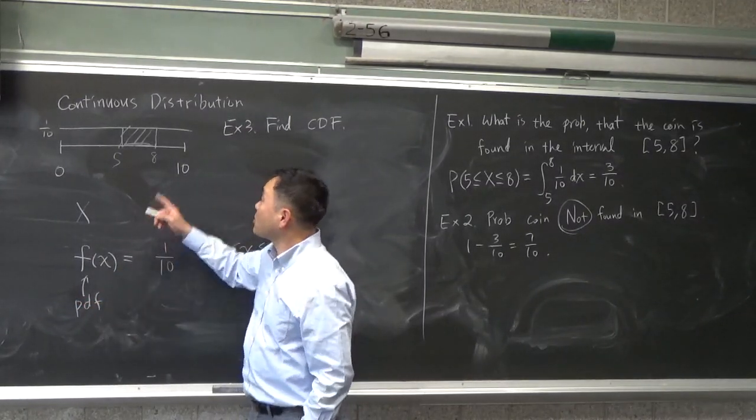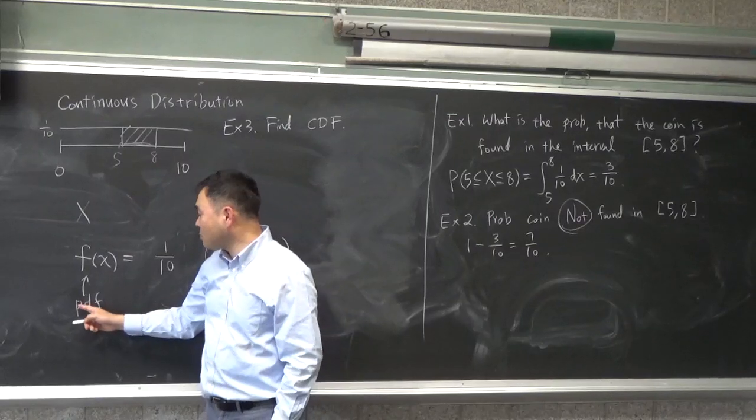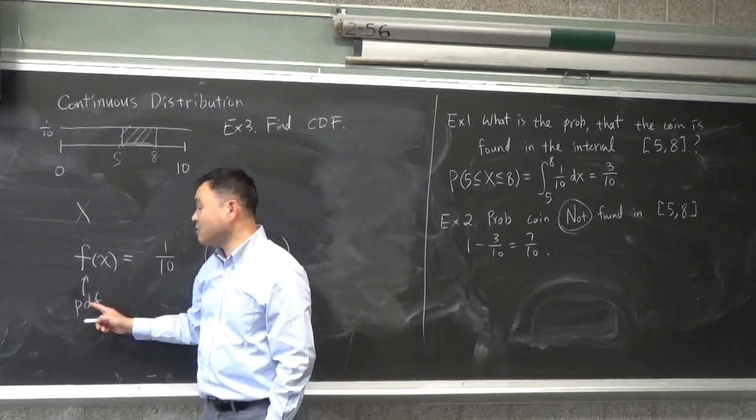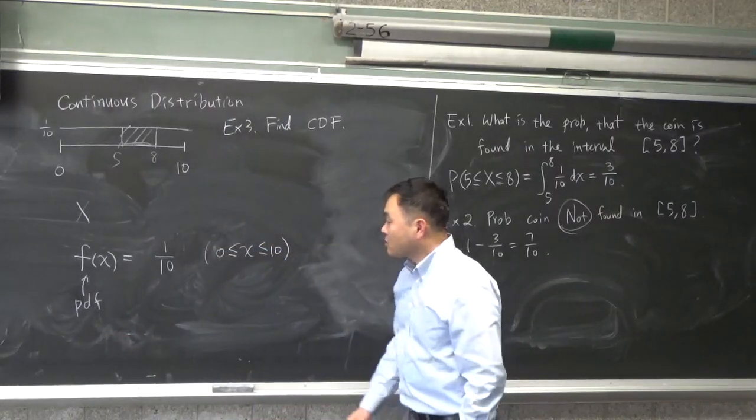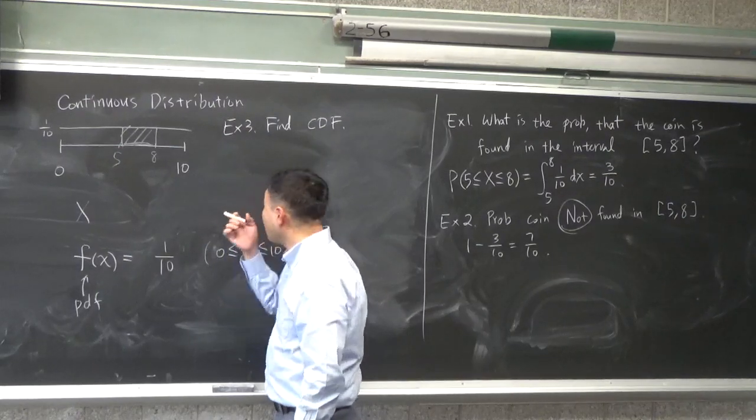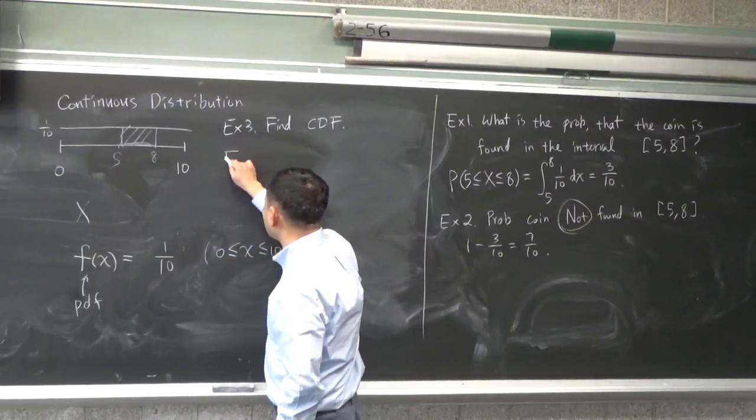So, for the continuous distribution, I write PDF, but it's slightly different. It means probability density function, not that it matters much. But, we use small case f for probability density function, and for the CDF, we use capital F.